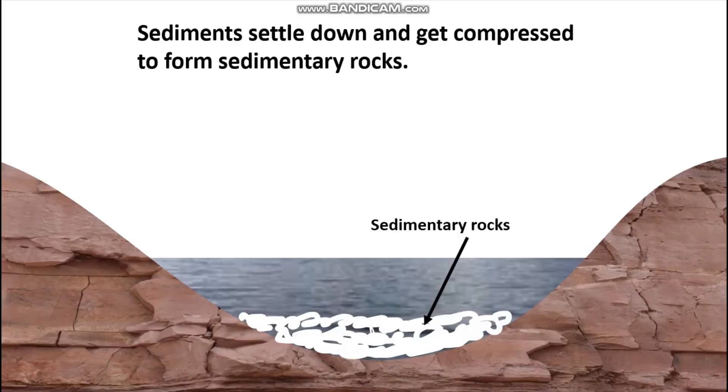Alternatively, we can have different waters from different rivers mixing in a water body. When they mix, because they carry different minerals, we have a chemical reaction. Because of those different minerals reacting, we have the formation of precipitates. That precipitate is the source of sediments which can settle at the bottom of the water body, get compressed and compacted, leading to the formation of sedimentary rocks.